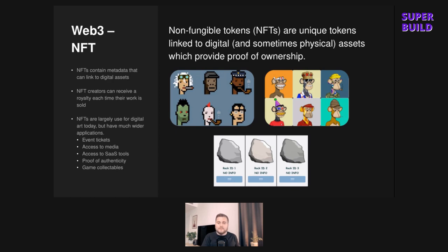The main difference between an NFT and a cryptocurrency like Bitcoin or Dogecoin is that there's a little bit of extra information stored on the blockchain — metadata — and that can link to digital assets. It could be an image, a video, a GIF, whatever.